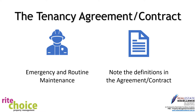The standard terms of the tenancy agreement Form 18a set out the legal definitions of emergency maintenance and routine maintenance. Please note those definitions in the agreement. Although everything is legally required to be in writing, if you have an emergency repair situation as per the definition, please phone our agency and refer to the agreement for emergency after-hours contact details and procedures — we will confirm in writing at a later date.